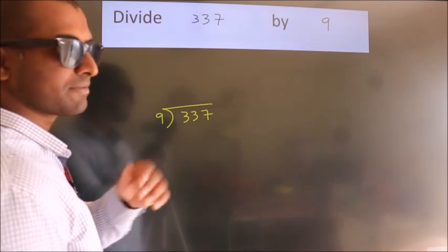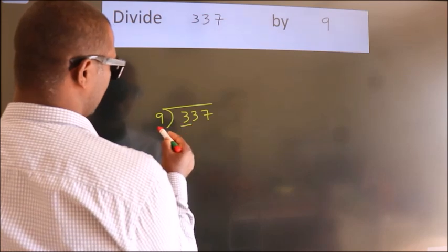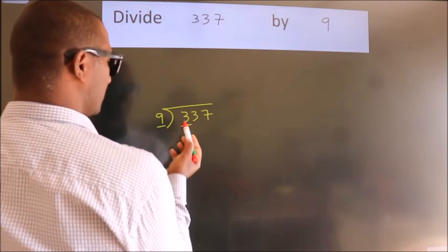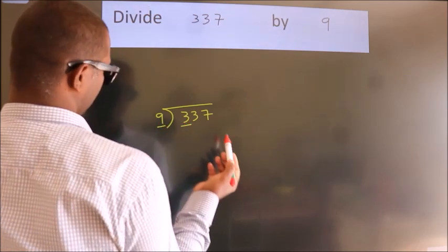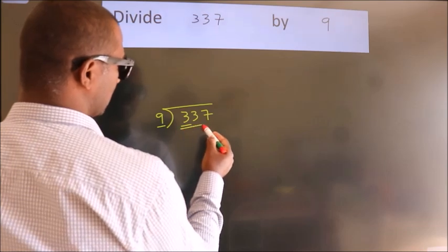Next. Here we have 3. Here 9. 3 is smaller than 9, so we should take 2 numbers: 33.